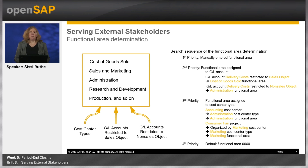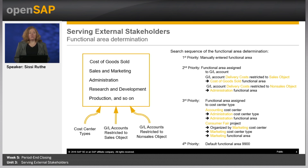The determination by a general ledger account can differentiate depending on the business transaction. In case the posting is created based on a sales object like a sales order, you can define a different functional area than in case of non-sales objects. For example, delivery cost based on sales transactions can be assigned to the functional area cost of goods sold. In case delivery cost incurred based on any business transaction independent of sales, they can be assigned to the functional area administration. The third priority is the determination based on a cost center type. If you post any expenses on cost center accounting which has the cost center type administration assigned, the functional area administration will be determined.